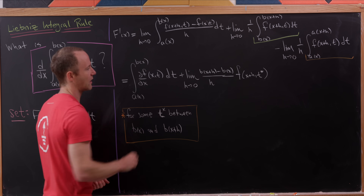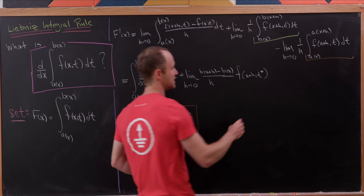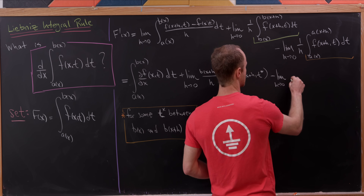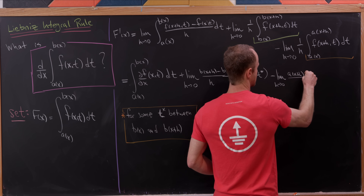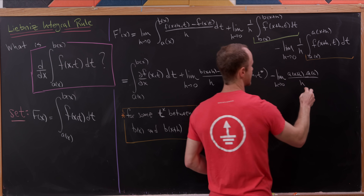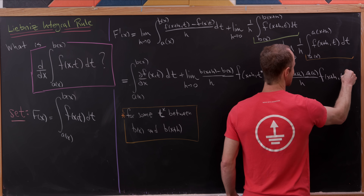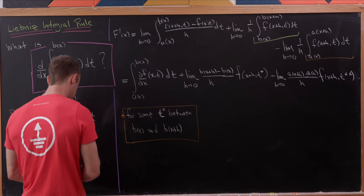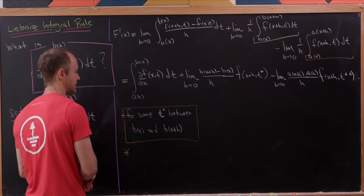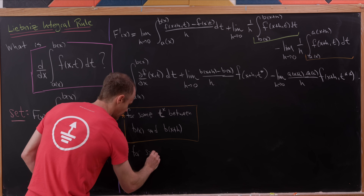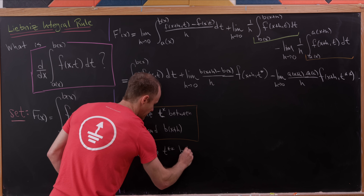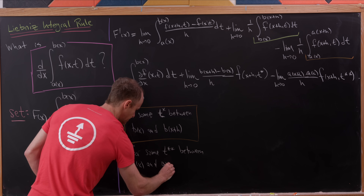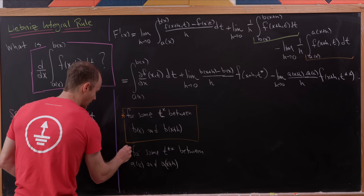The same applies to the next part, giving us minus the limit as h goes to zero of a(x+h) minus a(x) all over h, times f(x+h, t**), where t** is for some point between a(x) and a(x+h), since those are the bounds of integration.